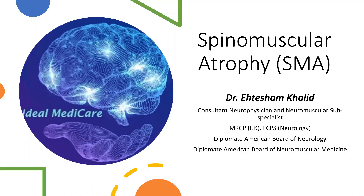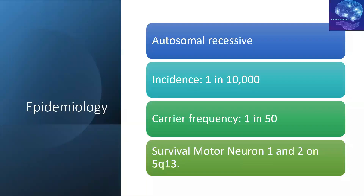Bismillahirrahmanirrahim. The lecture today is about a commonly seen autosomal recessive neuromuscular condition called spinal muscular atrophy. It's an autosomal recessive neurological condition. Its incidence is 1 in 10,000 in the American population, and the carrier frequency is 1 in 50. You can imagine by these numbers how commonly we come across these conditions in a neuromuscular clinic.